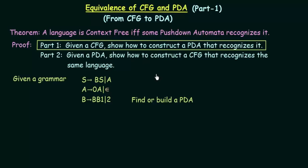We are going to prove it using construction — we have an example grammar and will show how to construct a PDA for it. The grammar says: S gives BS and also A; A gives 0A and also Epsilon; B gives BB1 and also 2. If we can build a pushdown automata for this context free grammar then we can prove the theorem which says a language is context free if and only if some PDA recognizes it, and hence CFG and PDA are equivalent.